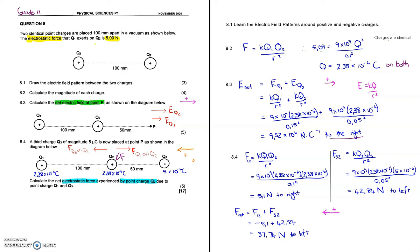To convert from millimetres to metres, you divide by 1000. When we substitute and calculate, we get the charge on each of the point charges to be 2.38 times 10 to the negative 6 coulombs. Remember, that applies to both of them. That was 4 marks.